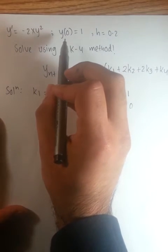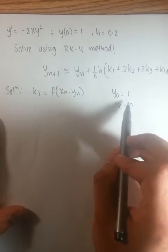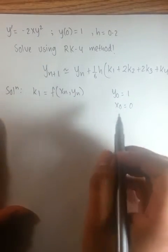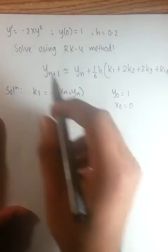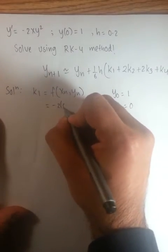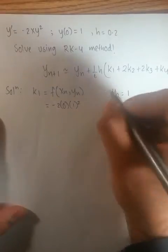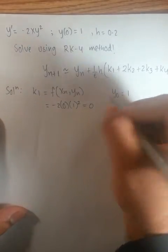From here, y at 0 is equal to 1, so x0 is equal to 0 and y0 is equal to 1. So plug these values of x and y into the function and you would get negative 2 times 0 times 1 squared. And your k1 value is 0.